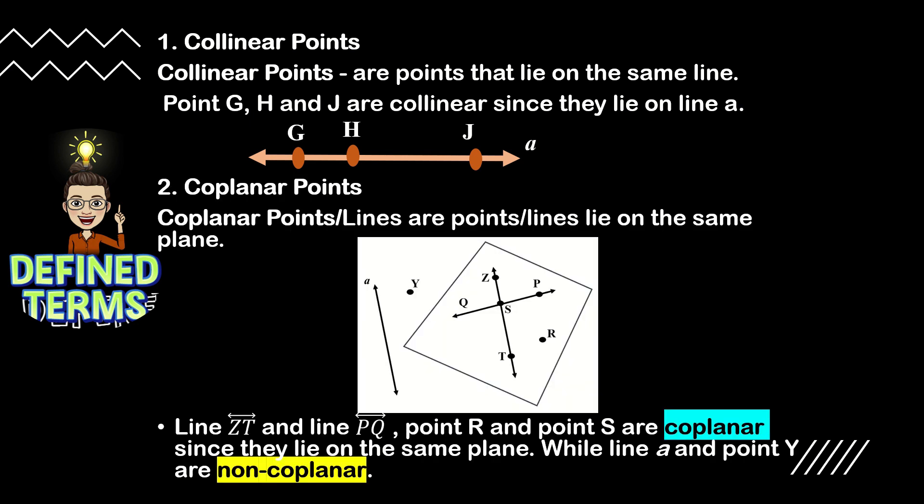Number two, we have coplanar points. Coplanar points or lines are points or lines that lie on the same plane. Based on the illustration, line ZT and line TQ, point R, and point S are coplanar since they lie on the same plane. While line a and point Y are non-coplanar — line a and point Y are outside the plane R.